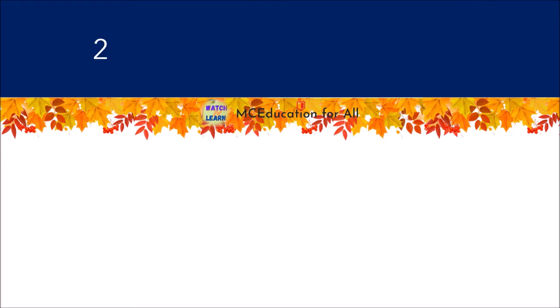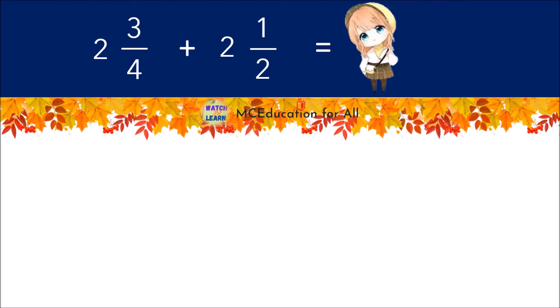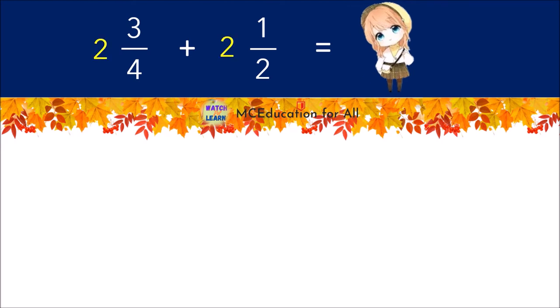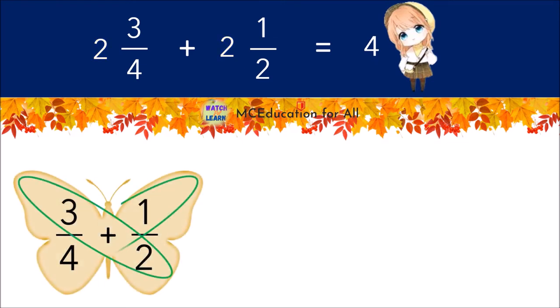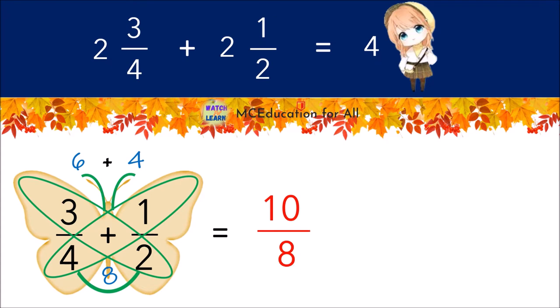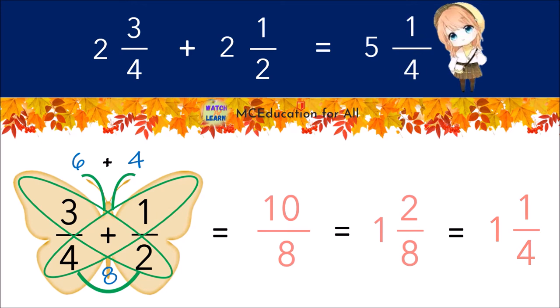One more example: two and three-fourths plus two and one-half. First add the whole number, then the fraction using butterfly method. If the fraction is improper, change it to mixed number and simply add the fraction to the whole number. One and two-fourths, add the whole number. One plus four is five, then copy the fraction. As a result, the answer is five and one-fourth.